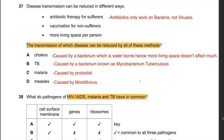Question 37: Which disease's transmission can be reduced by antibiotic therapy, vaccination, and more living space? Antibiotics only work on bacteria, so malaria and measles are excluded. Cholera is waterborne, so more living space has little effect. All three methods — antibiotic therapy for sufferers, vaccination for non-sufferers, and more living space — best reduce TB transmission. The answer is B: TB.